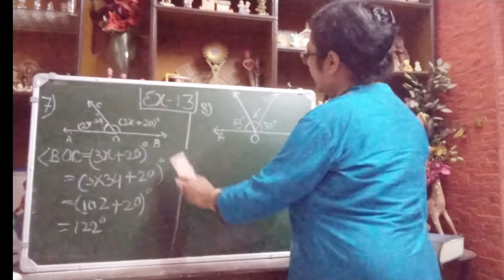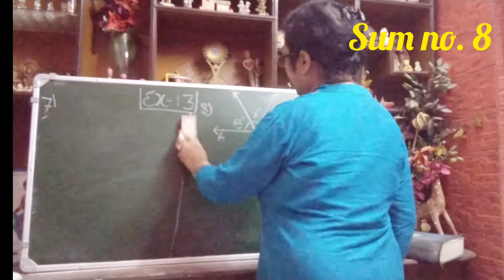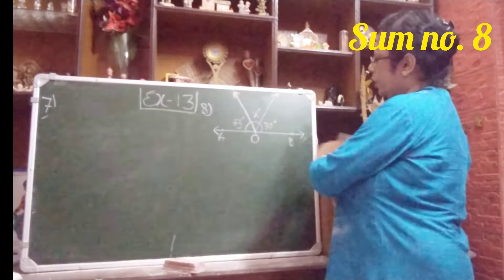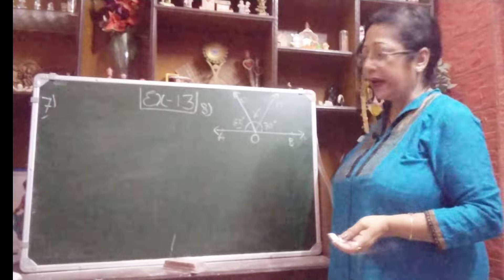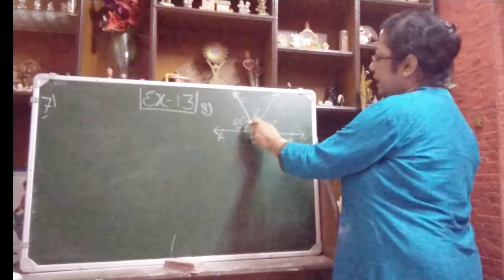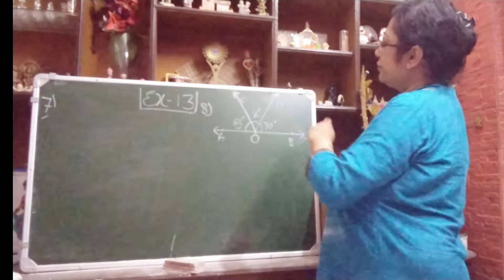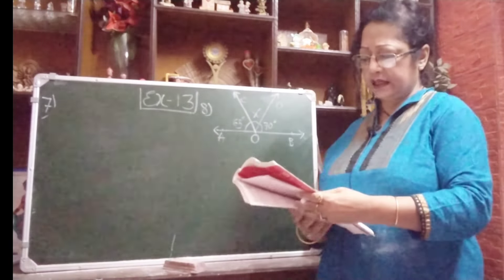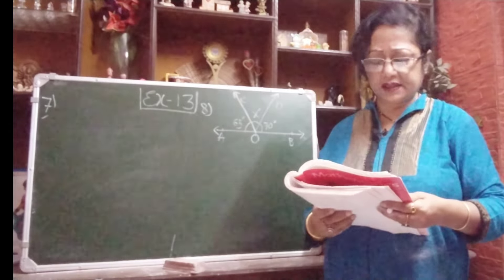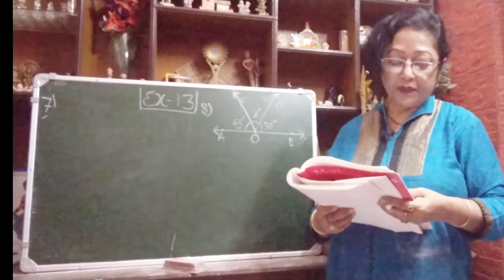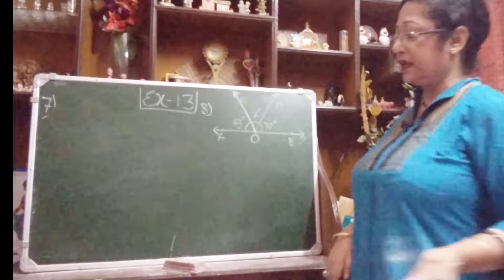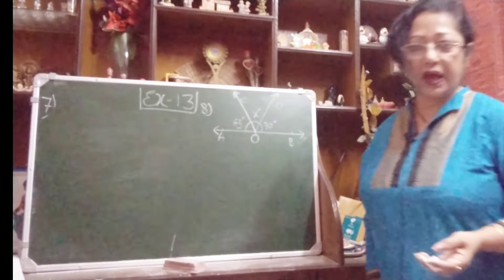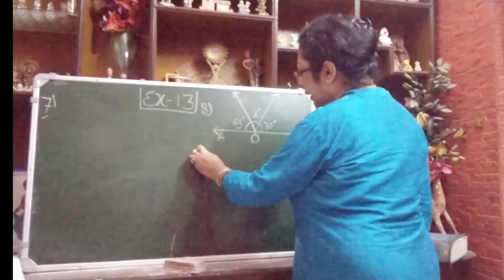Sum number 7 is done. Now let me do sum number 8. In the given figure, AOB is a straight line and rays OC and OD stand on it, forming three angles: 65 degrees, x degrees, and 70 degrees. Angle AOC equals 65 degrees, angle BOD equals 70 degrees, and angle COD equals x degrees. We have to find the value of x.